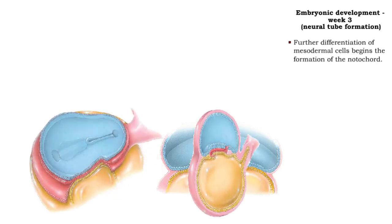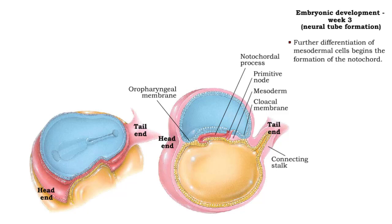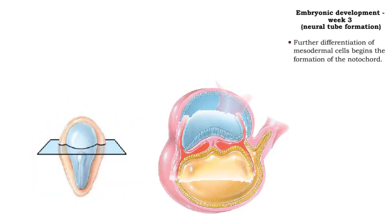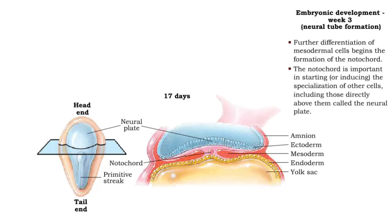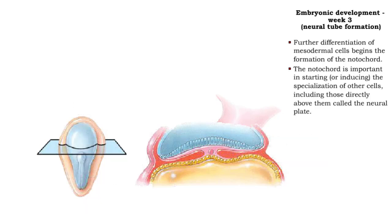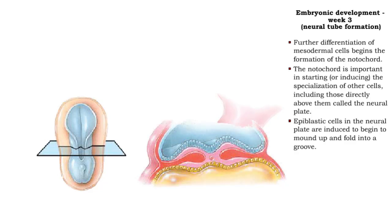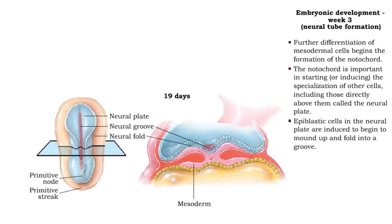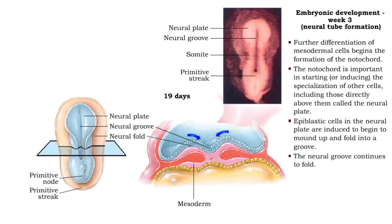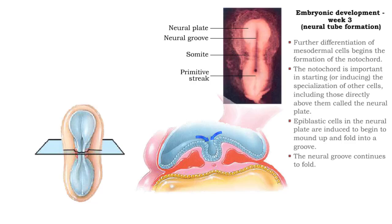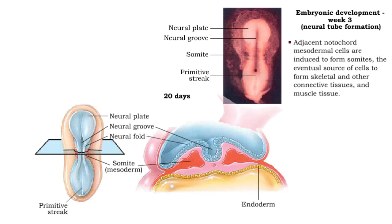Further differentiation of mesodermal cells begins the formation of the notochord. The notochord is important in starting or inducing the specialization of other cells, including those directly above them, called the neural plate. Epiblastic cells in the neural plate are induced to begin to mound up and fold into a groove. Adjacent notochord mesodermal cells are induced to form somites, which are the eventual source of cells that form muscle tissue, skeletal, and other connective tissue.